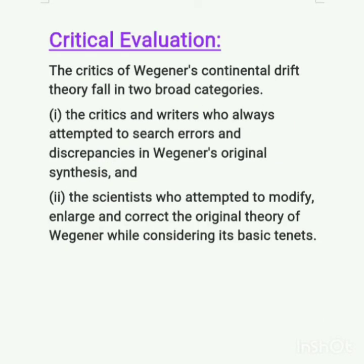After Wegener's theory was published in 1922, he faced many criticisms and contradictions. The critics of Wegener's continental drift hypothesis fall into two broad categories. The first were critics and writers who always attempted to search for errors and discrepancies in Wegener's original synthesis. The second were scientists who attempted to modify, enlarge, and correct the original theory while considering its basic tenets.